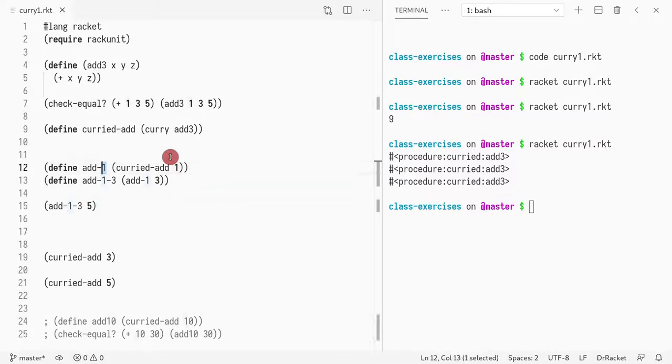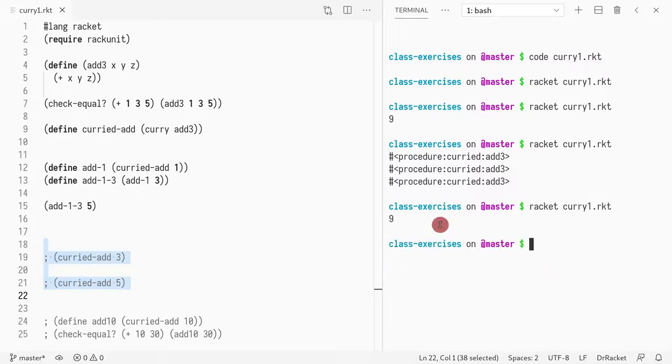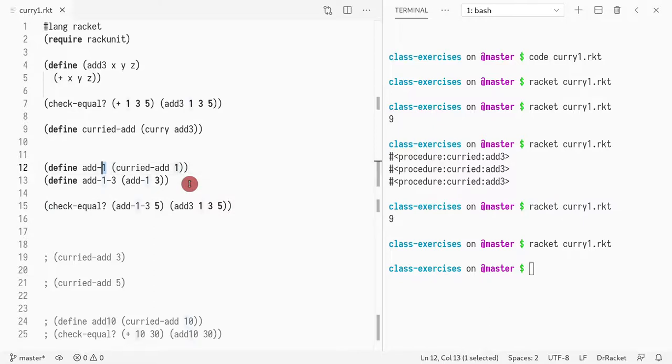Of course these names don't matter, it could be anything. First let me show you that this indeed does what it's supposed to do - I see nine, so I can check equal that it's the same as add three one three and five. This name doesn't matter so I could say v1 and this would be v2, and I would get the same value.